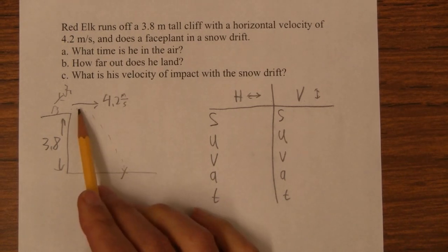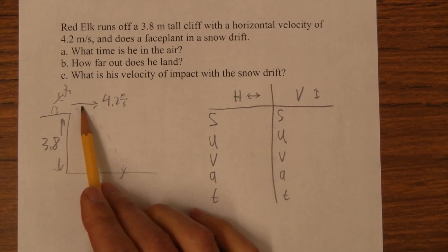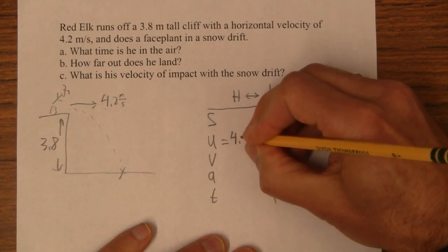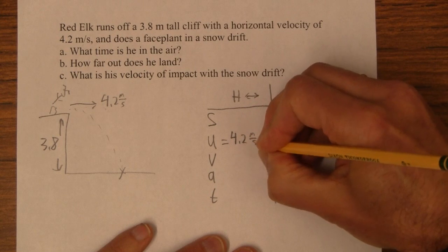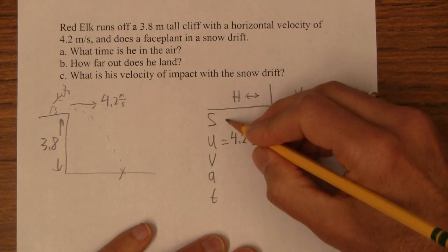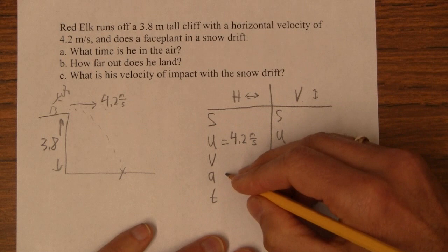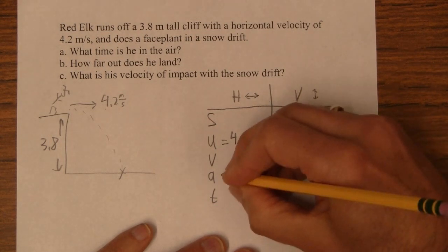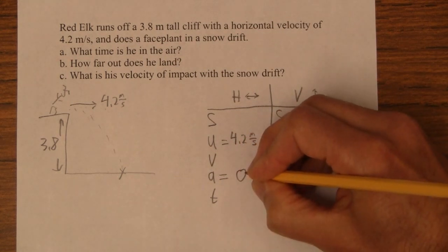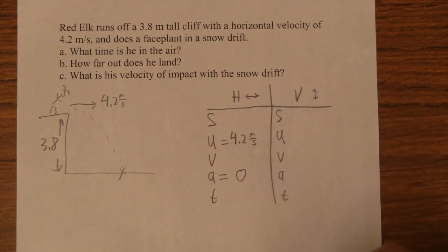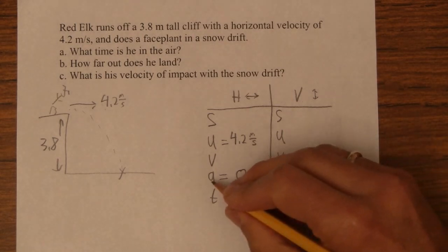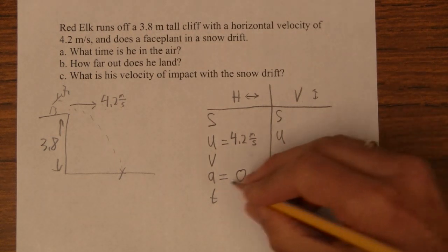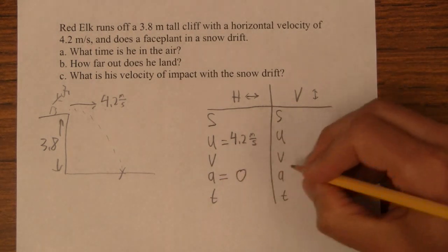Now, in the horizontal direction, all we know is his initial velocity is 4.2 meters per second. We don't know the horizontal displacement. But this is true of all normal projectile motion problems, is that in the horizontal direction, the acceleration is zero. Assuming that Red Elk didn't recently eat at Taco Bell or that he doesn't have a jet pack on, he's not going to accelerate. There's no way for him to accelerate horizontally. Now, vertically, he's going to accelerate, but horizontally, this is always true.